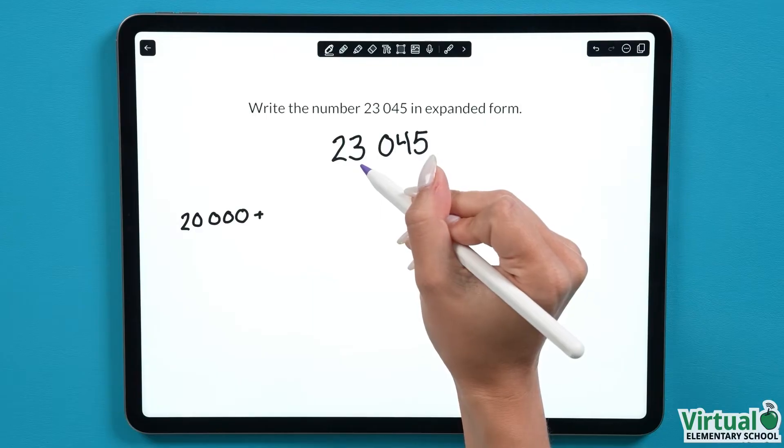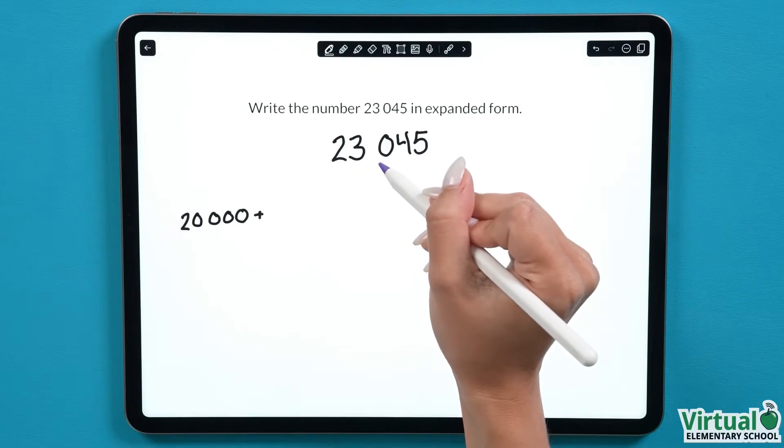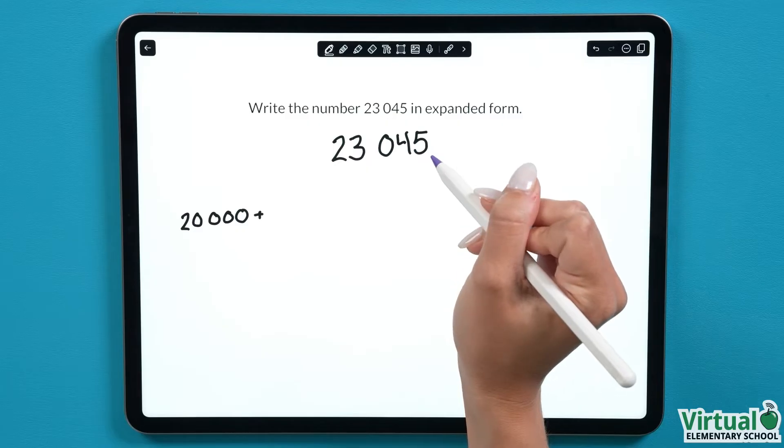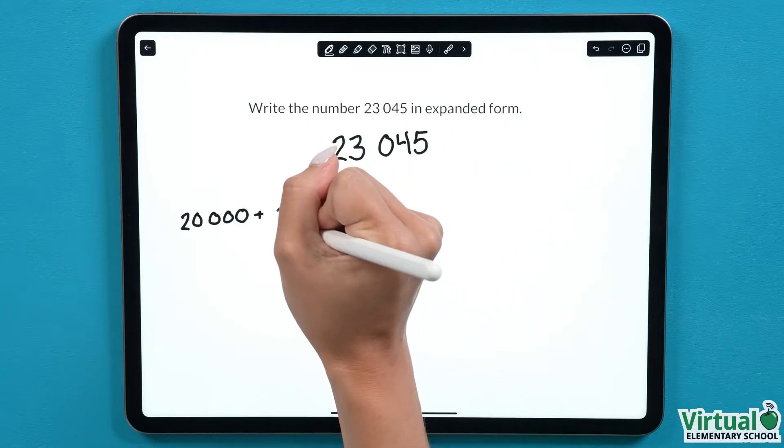Now we see that the next number is a 3. The 3 is in the thousands column since there are 3 places beside it. There are 3,000.